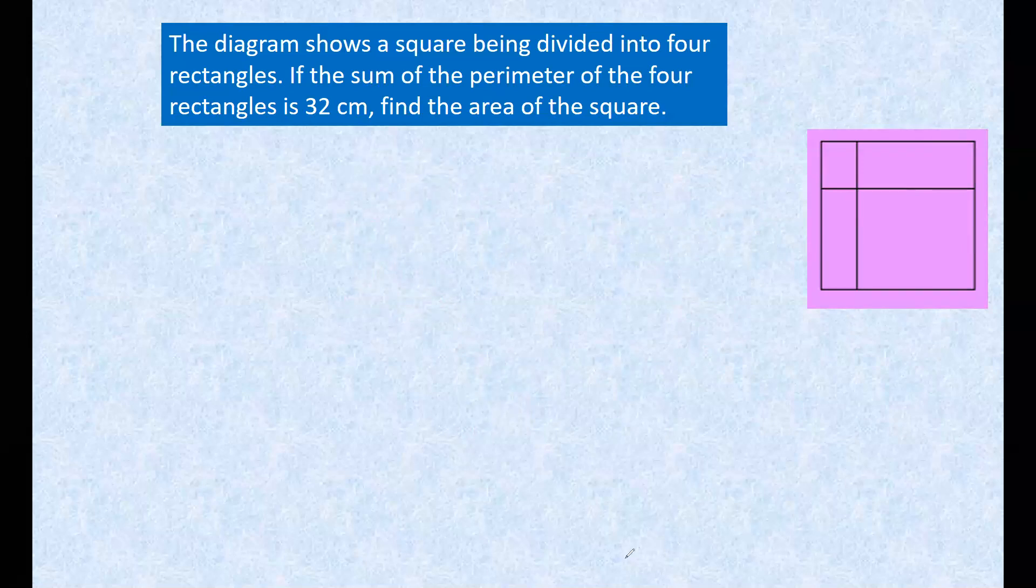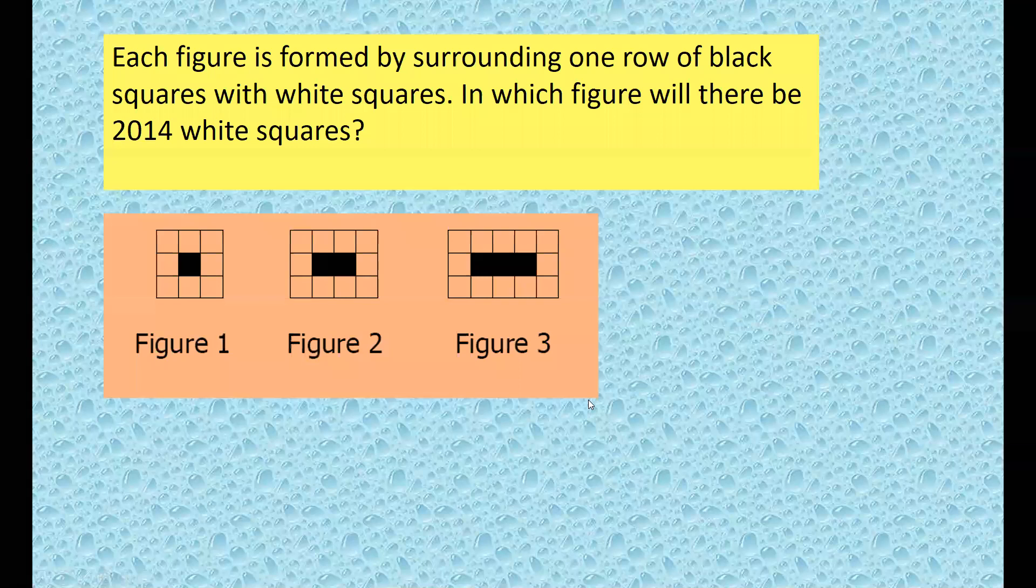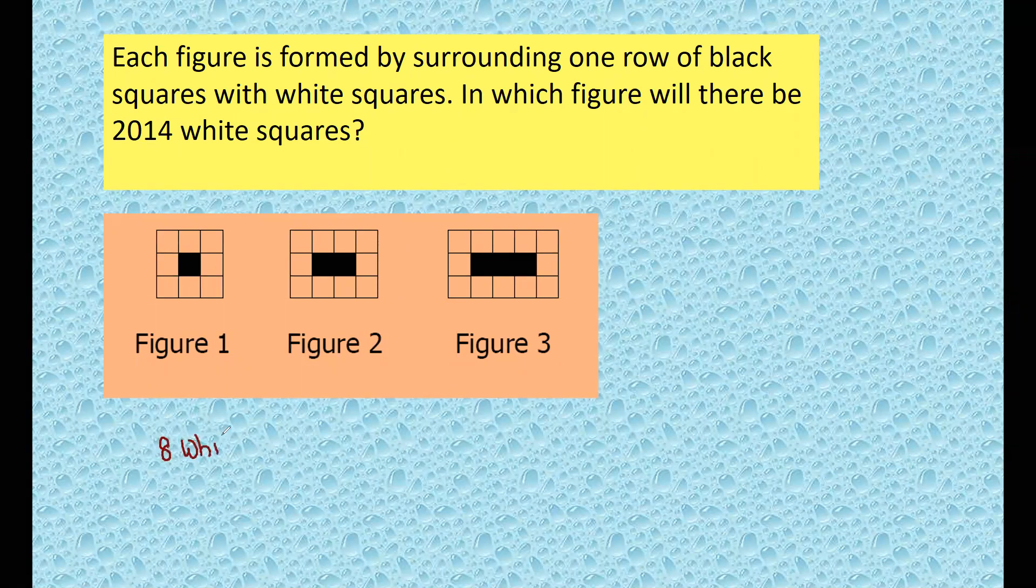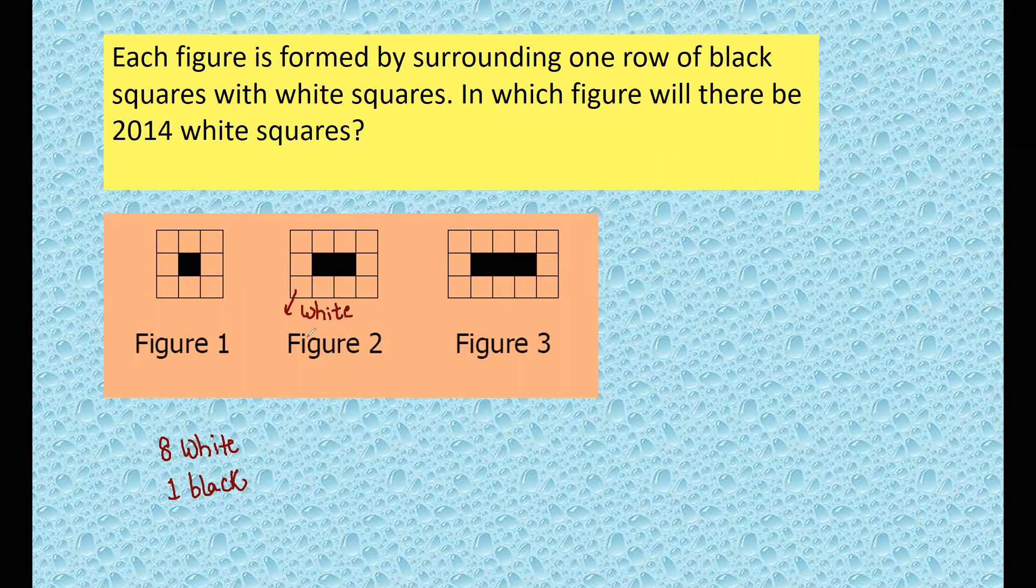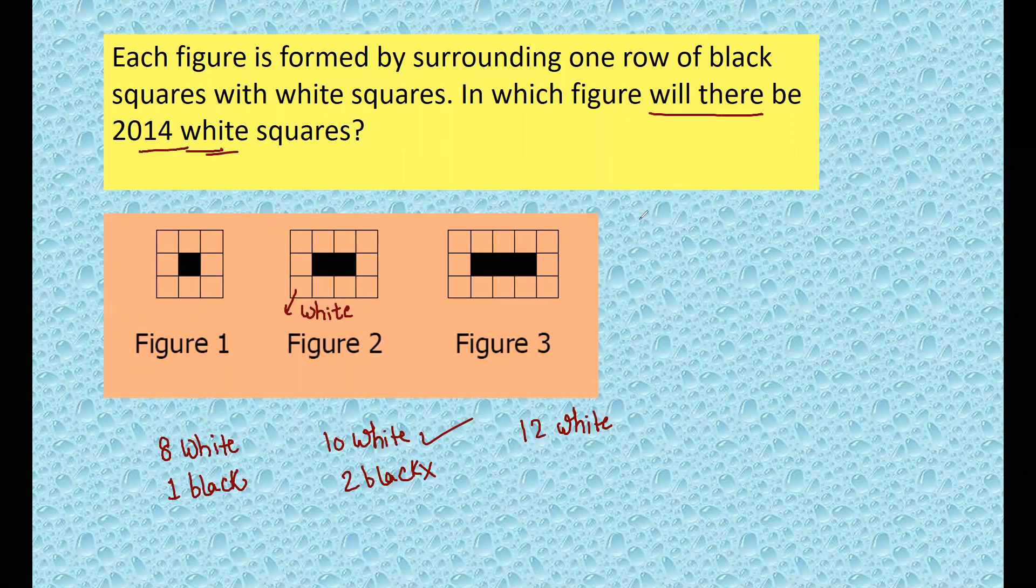Let's see this problem. It says the first figure has eight white and one black. You assume this as white because of color contrast. This one is 10 white and two black. We are considering just white ones. So one, two, three, four, five - here 12 white. Now which figure will there be 2014 white squares?